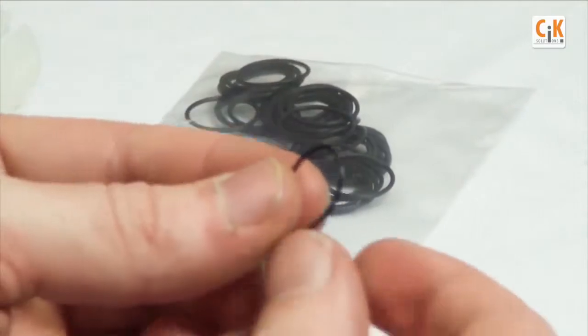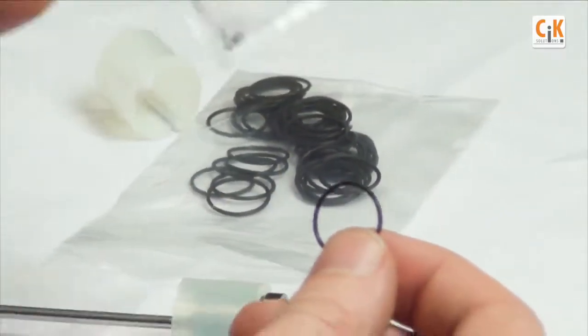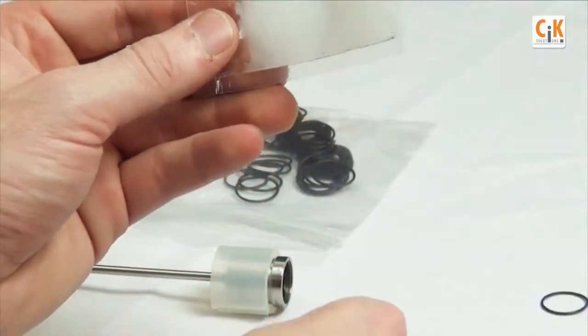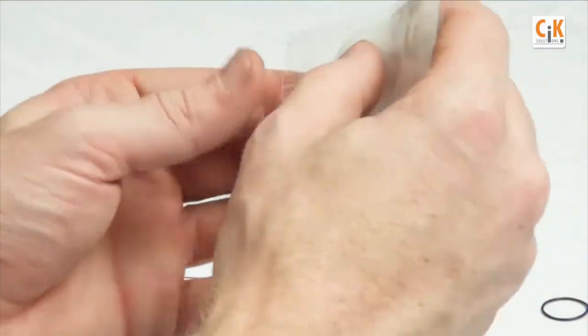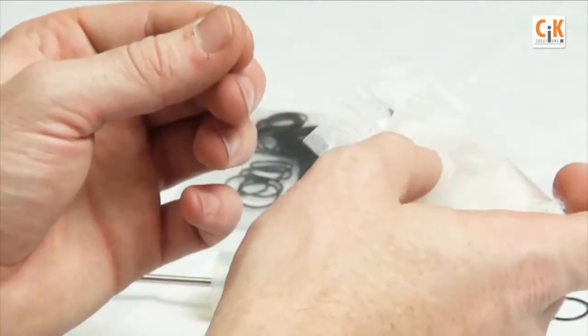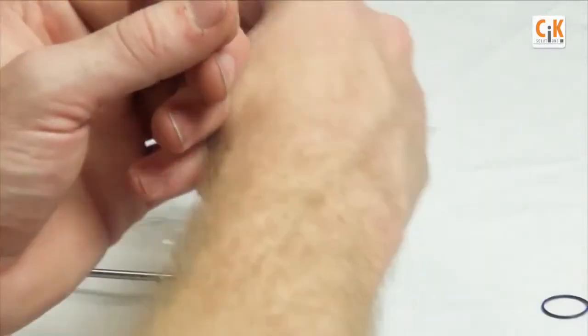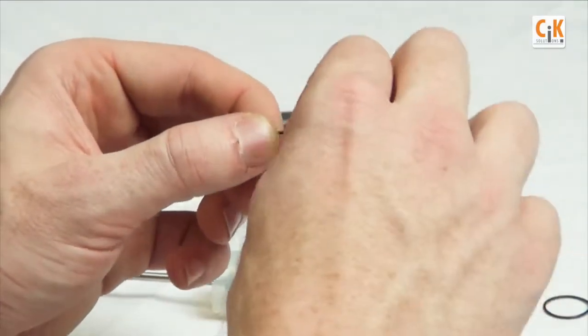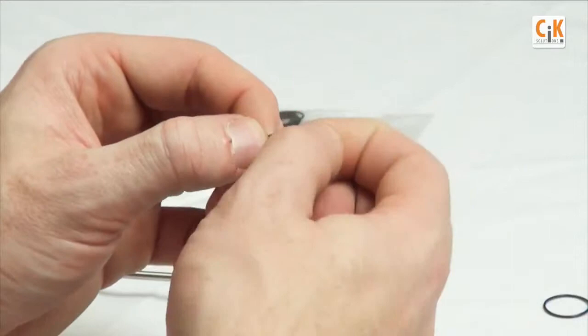Next, apply silicone grease to the new o-ring. Do this by rubbing a small amount on your index finger and thumb, and then slowly pulling the o-ring through your fingers to fully coat it.